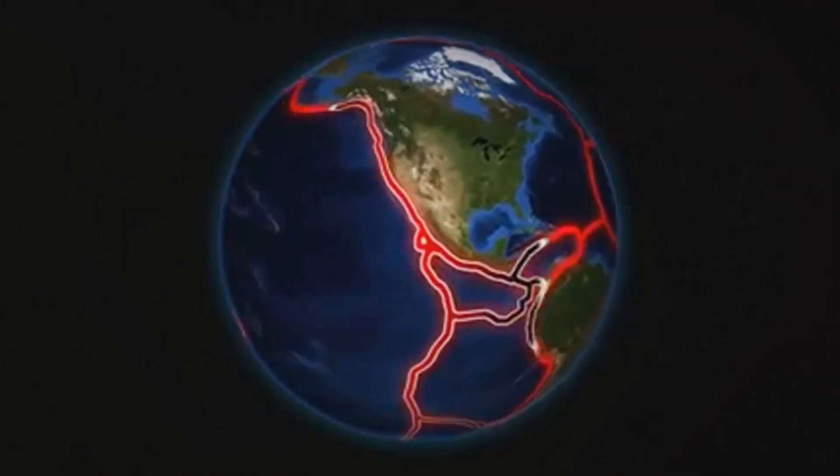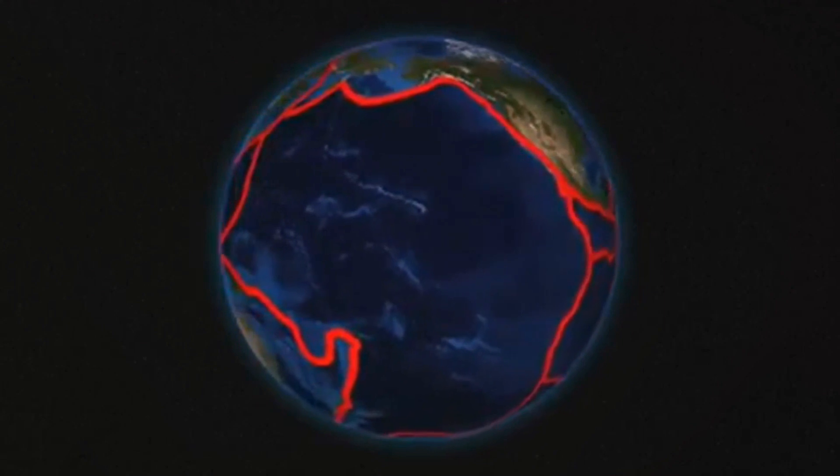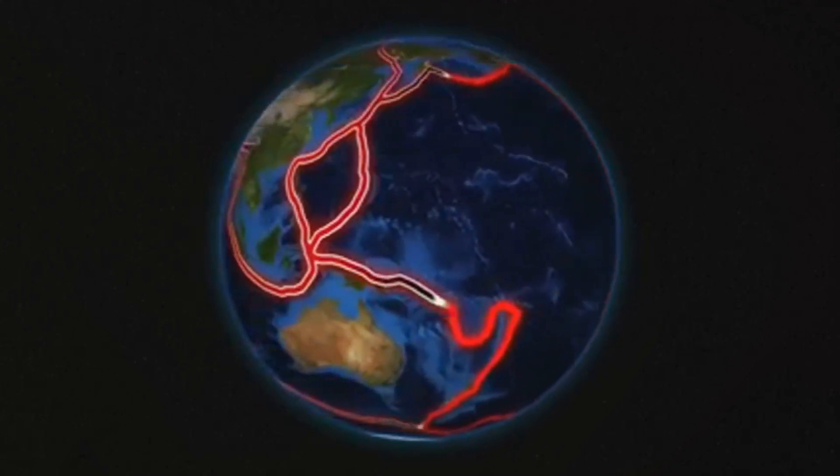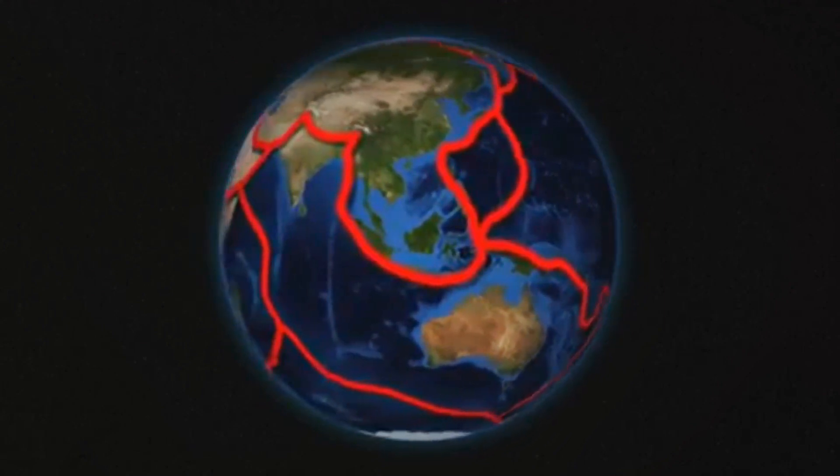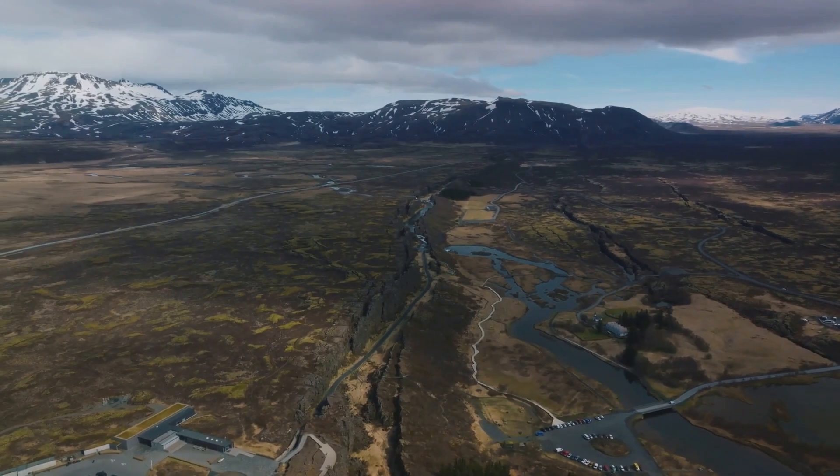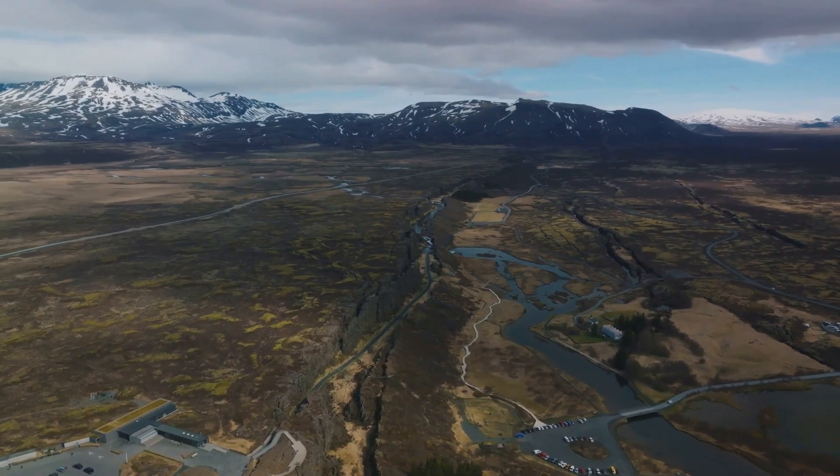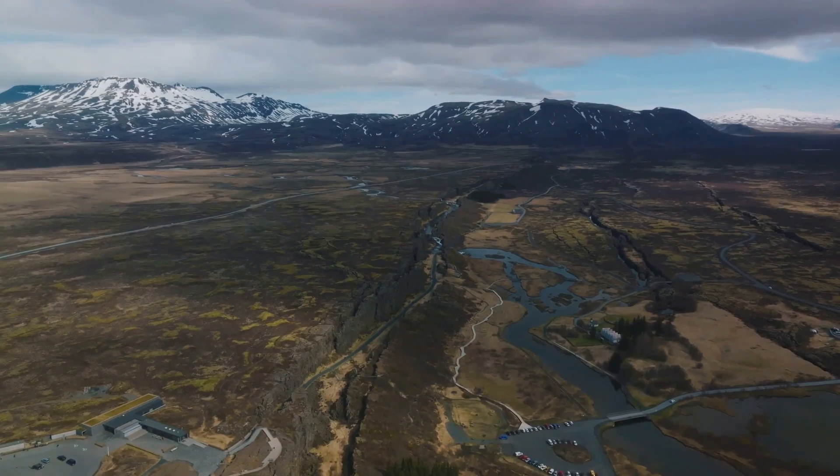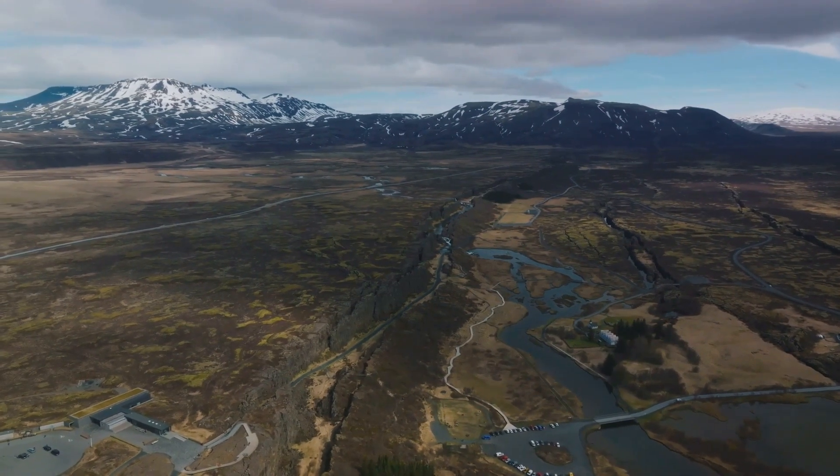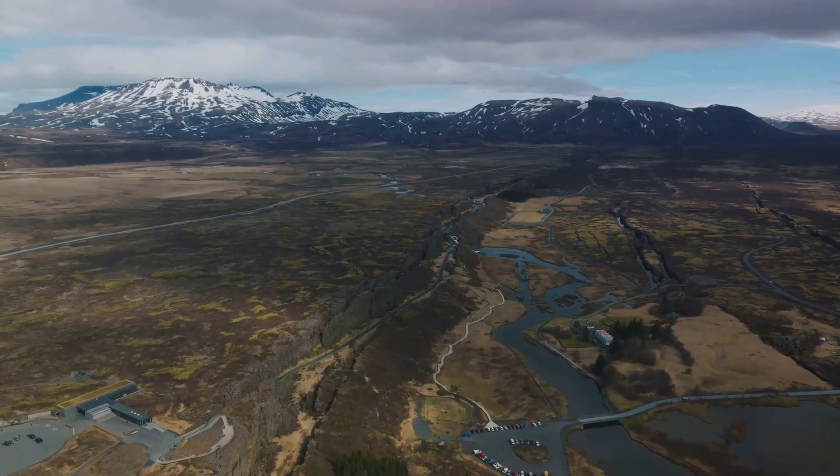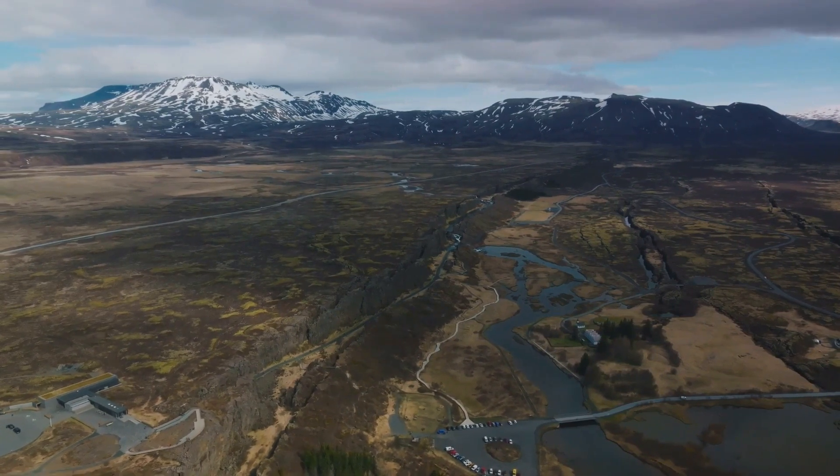The plate tectonics theory proposed that the Earth's lithosphere is divided into several large and small plates that float on the semi-fluid asthenosphere beneath. These plates move and interact, leading to the formation of continents, ocean basins, mountains, and other geographical features.